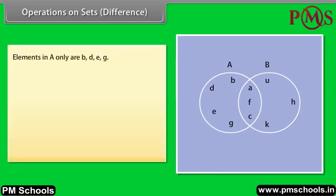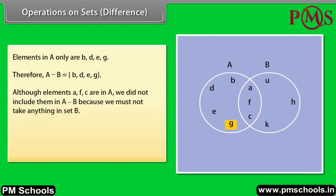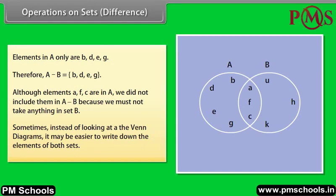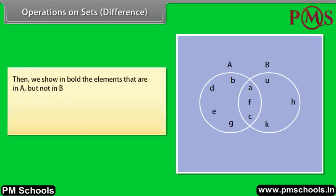Take a close look at this figure. Elements in A only are B, D, E, G. Therefore, A minus B is equal to {B, D, E, G}. Notice that although elements A, F, C are in A, we did not include them in A minus B because we must not take anything in set B. Sometimes, instead of looking at Venn diagrams, it may be easier to write down the elements of both sets. Then we show in bold the elements that are in A but not in B.